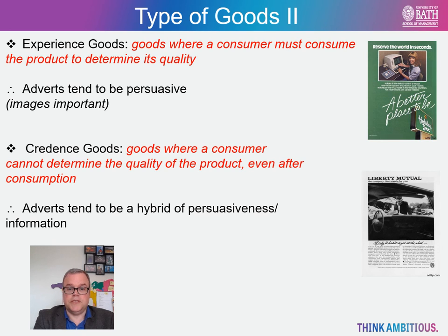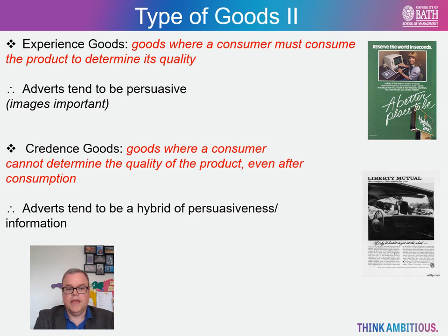Finally, we have credence goods, where a consumer cannot determine the quality of the good even after consumption. Examples here include insurance products, where you only find out how good an insurer really is if you need to make a claim, or repair services — think of a car service. Most people can't tell the difference in the actual running of a car even after it has been serviced. In such cases, the adverts tend to be a hybrid of persuasiveness and information, like this insurance advert from the early 1960s.